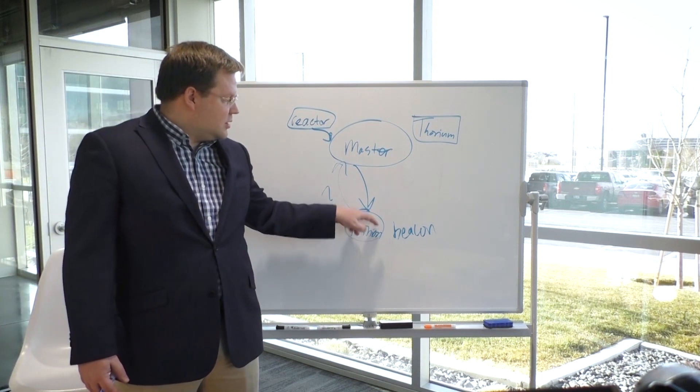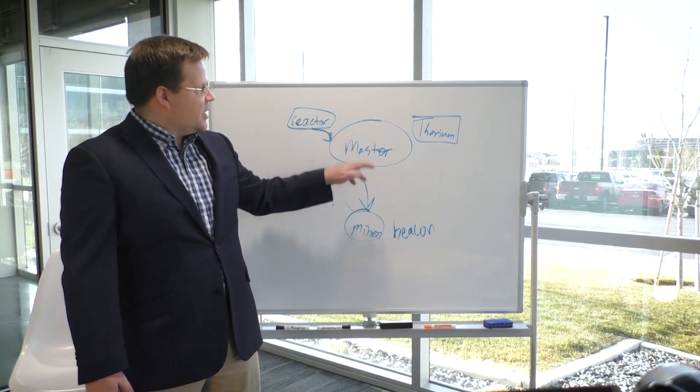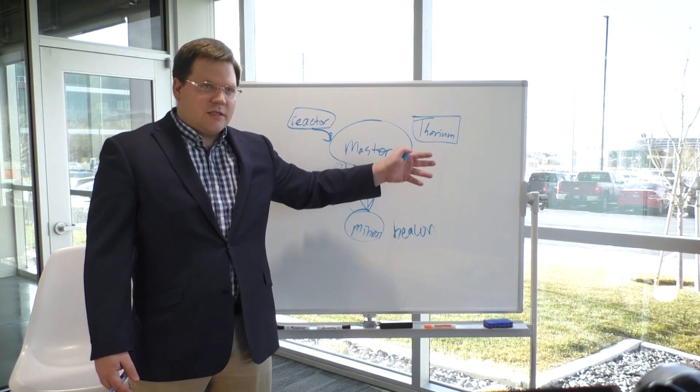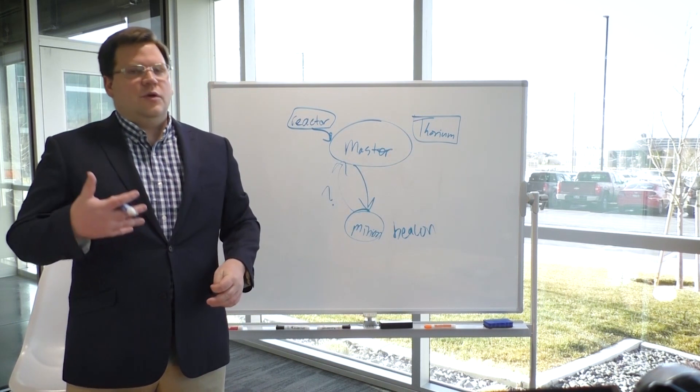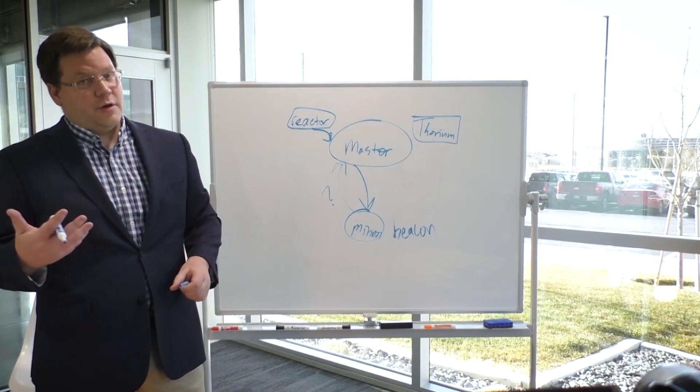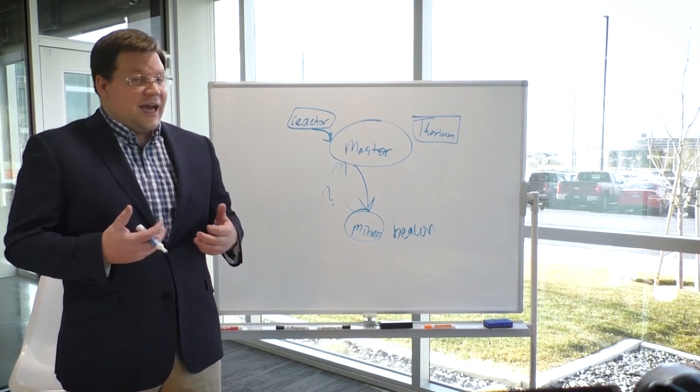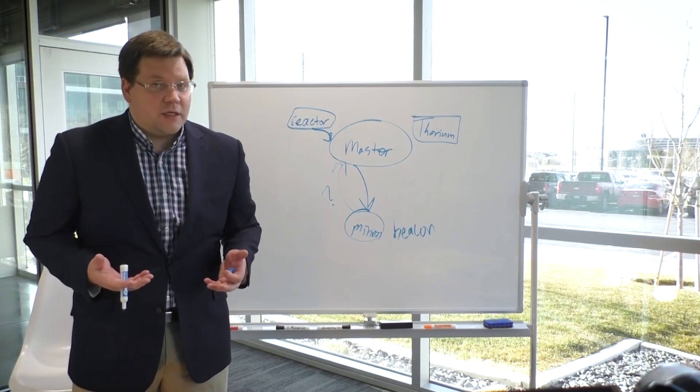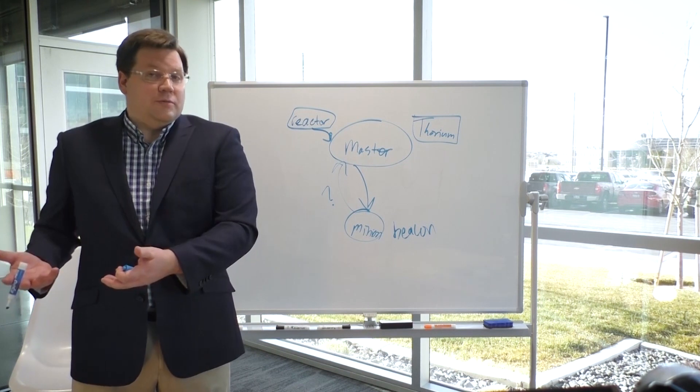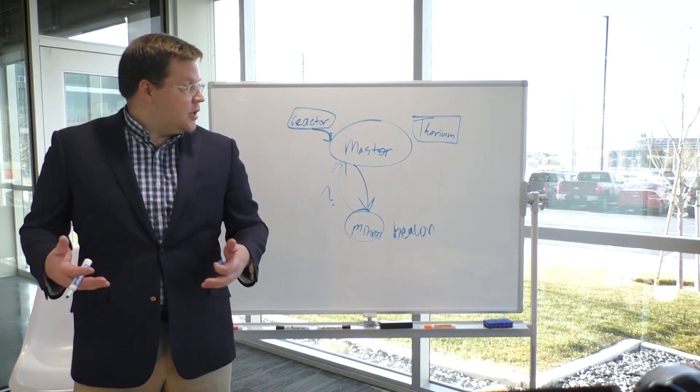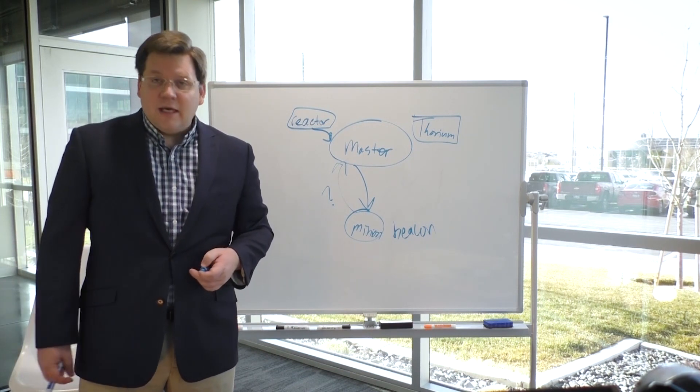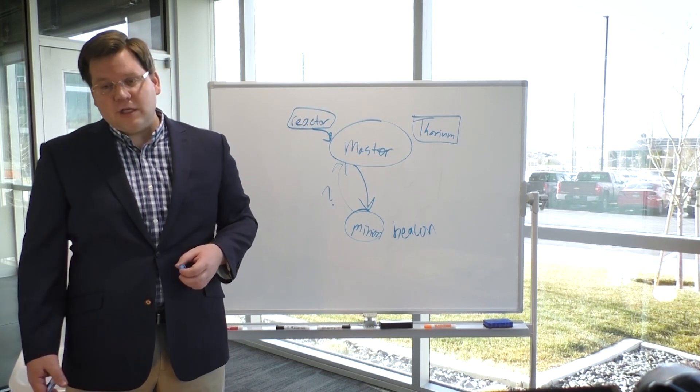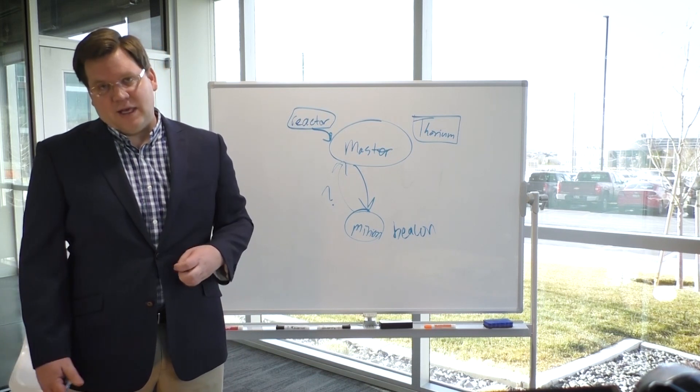I've got a beacon that's firing a status. And the thorium reactor can keep track of that status. And then we can have a reaction in the thorium reactor that says, I stopped hearing from this minion. I'm going to just assume it's gone. And then I can go ahead and delete that minion's key and execute some routines that clean up after that system.